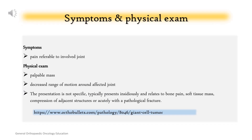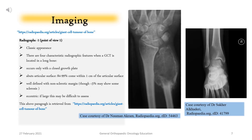Symptoms and Physical Exam: Symptoms include pain referable to the involved joint. Physical exam findings include a palpable mass and decreased range of motion around the affected joint. The presentation is not specific; it typically presents insidiously and relates to bone pain, soft tissue mass, compression of adjacent structures, or acutely with a pathological fracture.